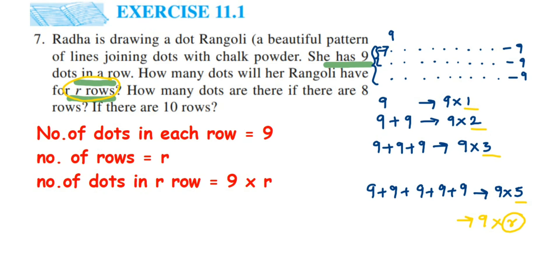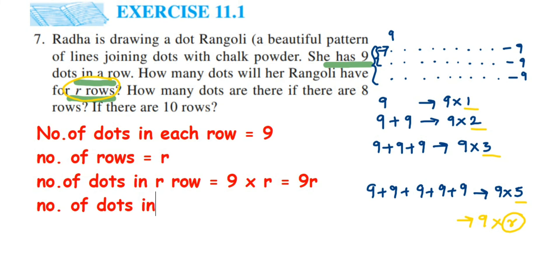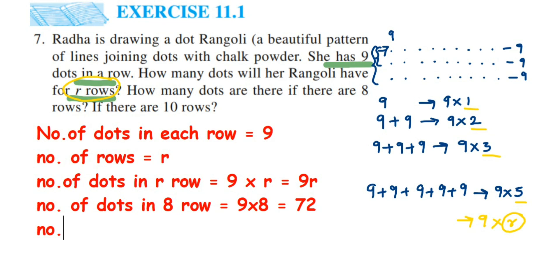The next question asks how many dots are there if there are eight rows. Since R can take any value, we substitute R equals eight. So number of dots in eight rows equals nine into eight, which equals 72.